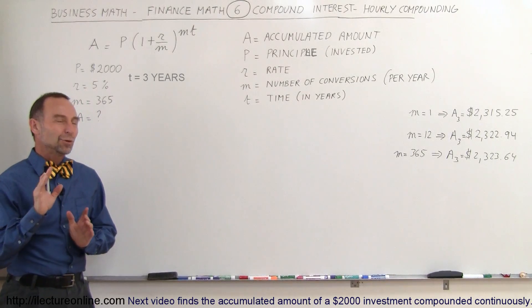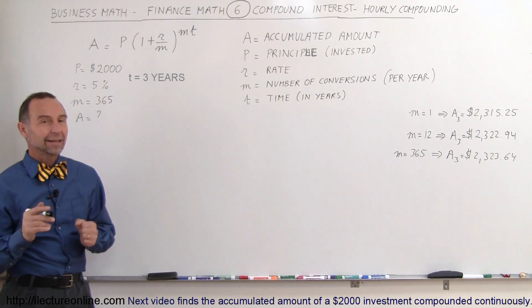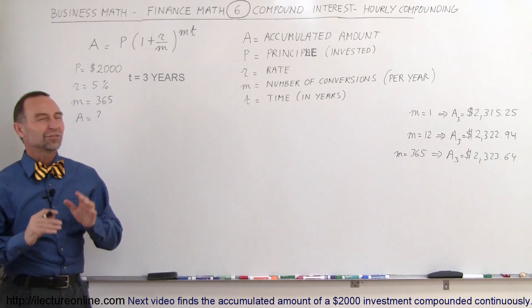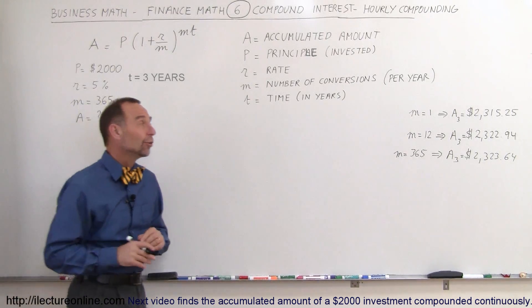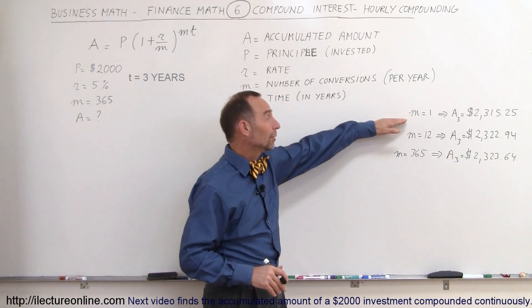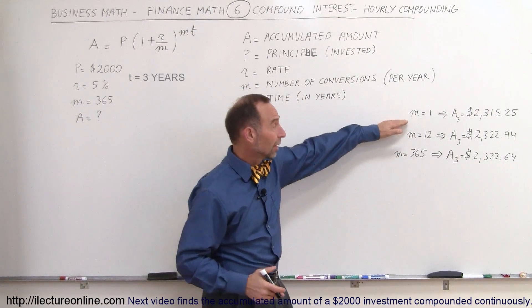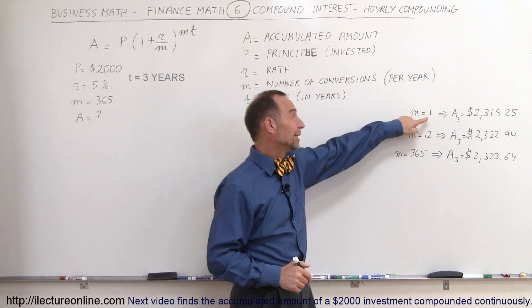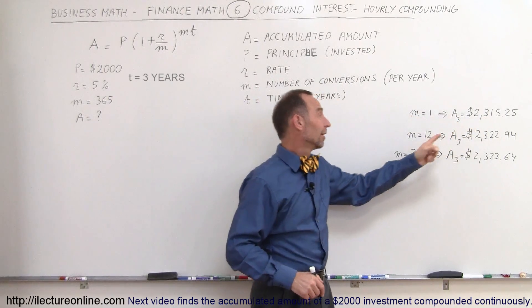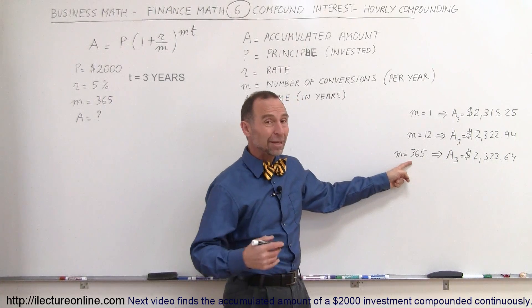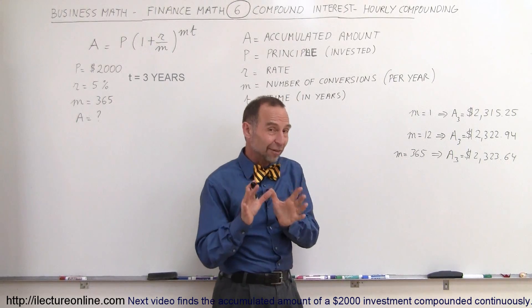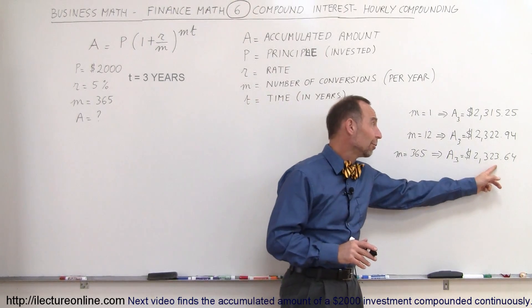Welcome to Lecture Online. Before we do continuous compounding, let's try hourly compounding to see the difference between daily and hourly compounding. In previous videos we saw the amount of interest earned on a $2,000 investment after three years: for yearly compounding was this much, monthly compounding was this much, and daily compounding with M equals 365, that's 365 conversions per year, was this much.